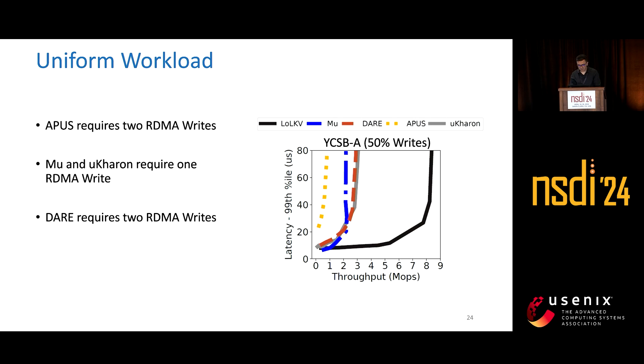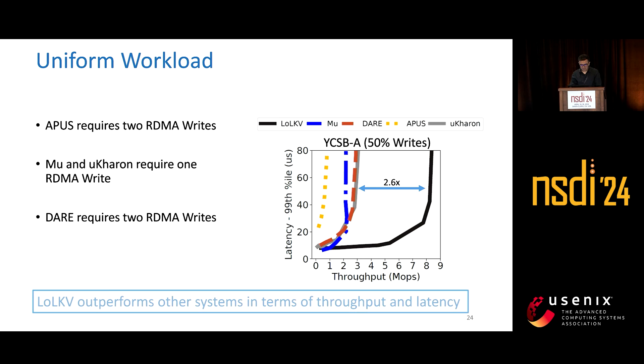We can see that LOLKV performs much better than the other systems. This is because we use only one RDMA write on the critical path to commit an operation. And any thread can serve any request, so we're not sharded like other systems. Our scalability is much better, which results in better throughput and latencies.